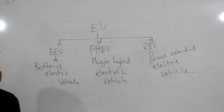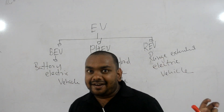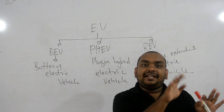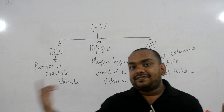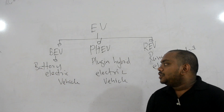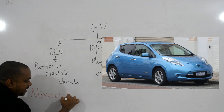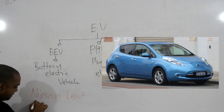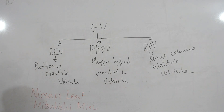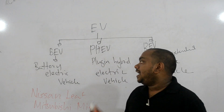A BEV is just like a toy — we have a battery, a motor, and then we drive the vehicle. We charge the battery, that electricity is used by the motor, and the motor drives the wheels through a transmission. That is the basic Battery Electric Vehicle. Main examples are the Nissan Leaf and the Mitsubishi.